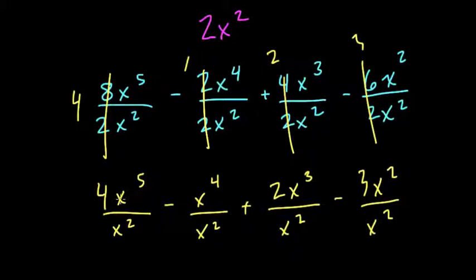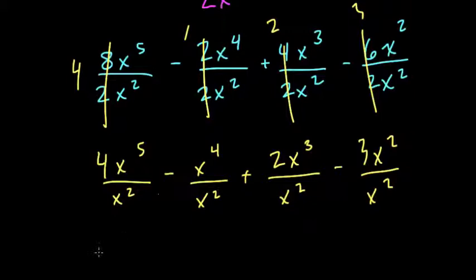Well, now what's nice is that we can use our laws of exponents. In each of these, we have bases of x, and we're dividing. So all we do now is subtract our exponents. So here is 4 times x to the 3rd, 5 minus 2 is 3,